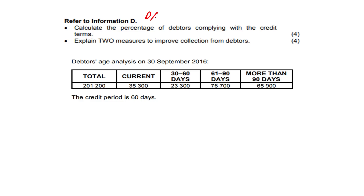Let us have a look at our DAA, our debtors age analysis, and we need to refer to information D. This is information D. Calculate the percentage of debtors complying with the credit terms and explain two measures to improve collection from debtors.